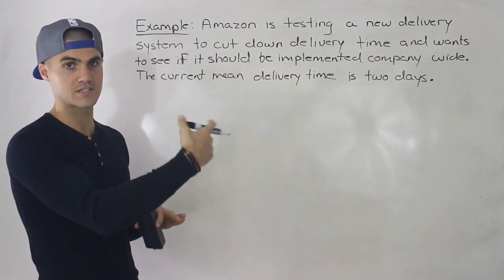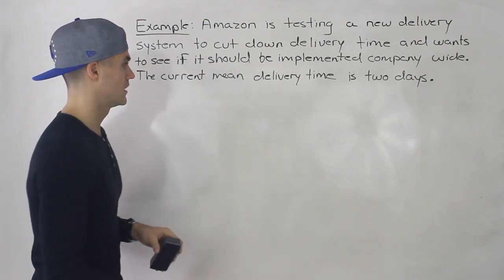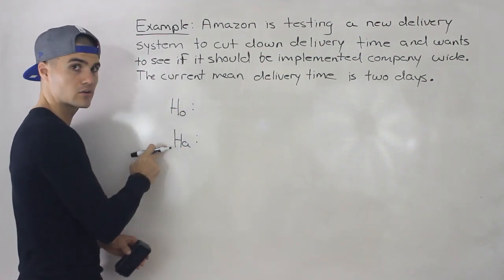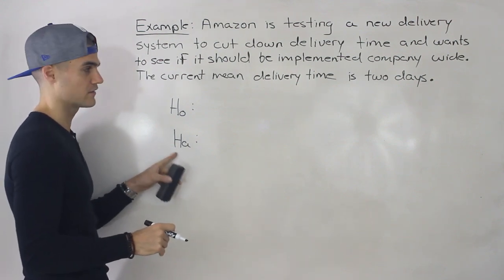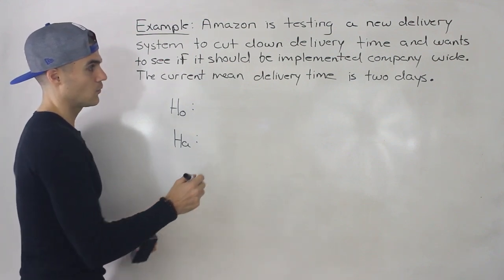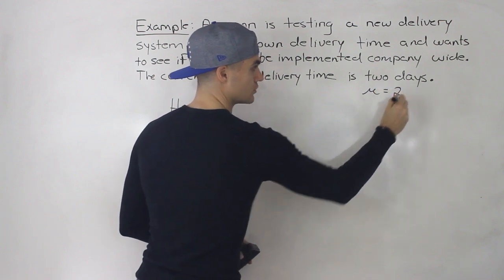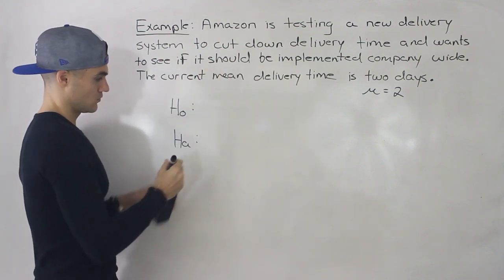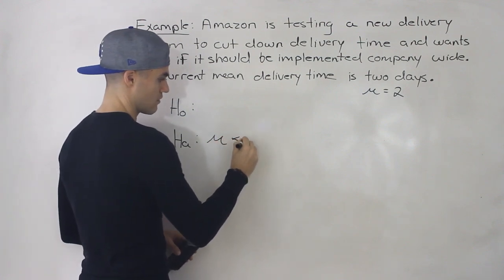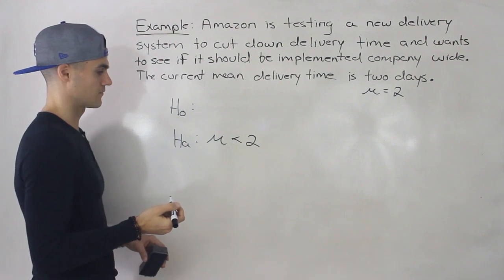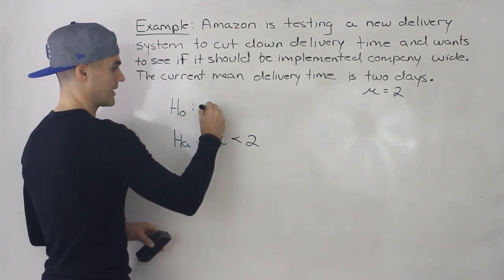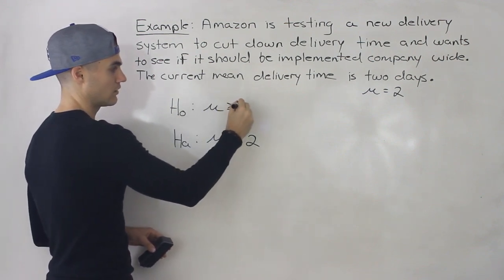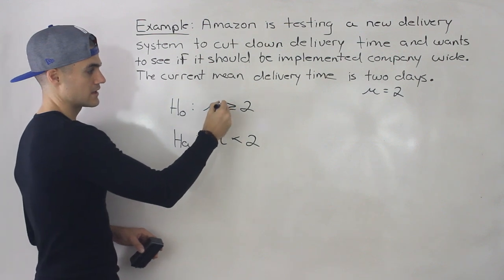We're specifically looking whether the delivery time is going to be less than two days — only less. We don't care if it's going to be greater; if it's greater, we're not going to implement this system. I like to start with the alternative hypothesis first. We're testing whether the average delivery time is going to be less than two days — that's the alternative hypothesis. And because our alternative hypothesis is one-sided, the null has to be one-sided as well: greater than or equal to two days.